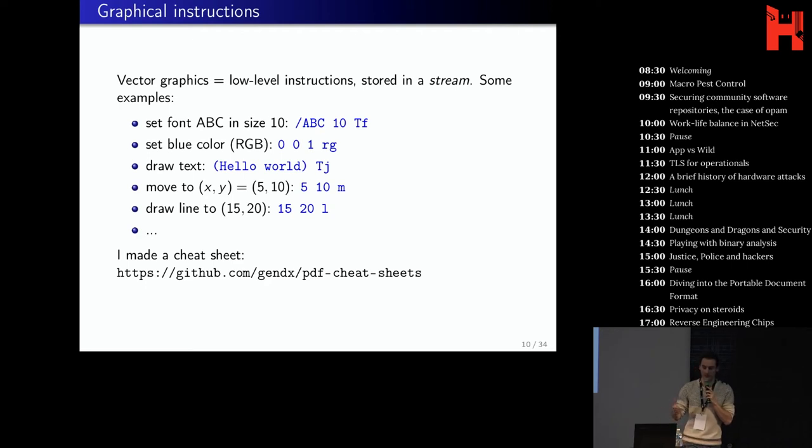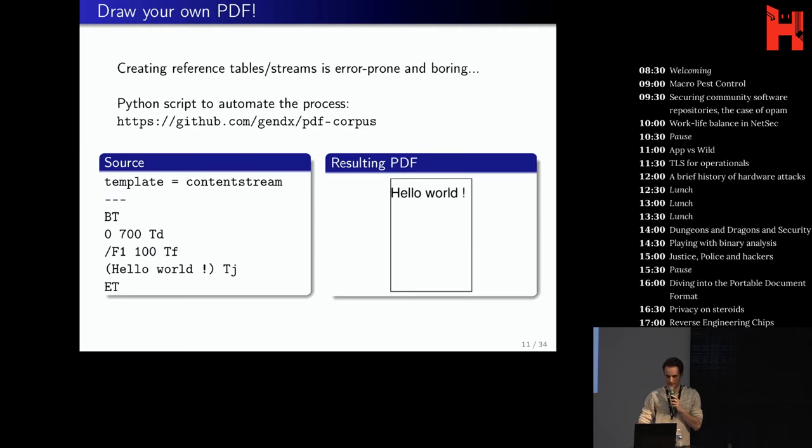Then, of course, PDF is used to view graphics. So there is a vector graphic engine, which is like low-level instructions that are stored in a stream. For example, like examples of very basic instruction, you can define a font, like the font ABC in size 10. Then you can define the blue color, so just one color in RGB format. Then you can draw some text with this font and this color. You can move to a point and draw a line, so you can draw pretty much everything with just basic instruction. So there is not so much of them, so I just made a cheat sheet. You can find it on GitHub if you want to try to play with it.